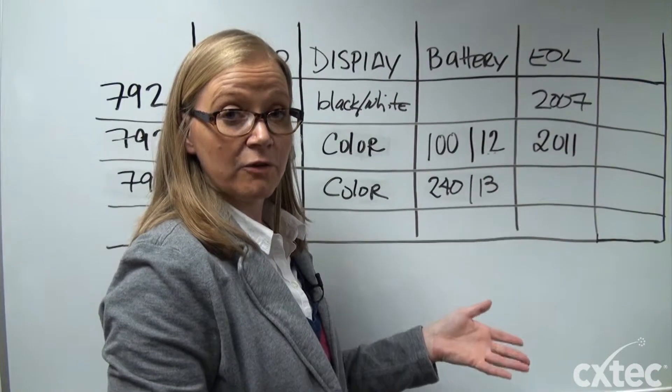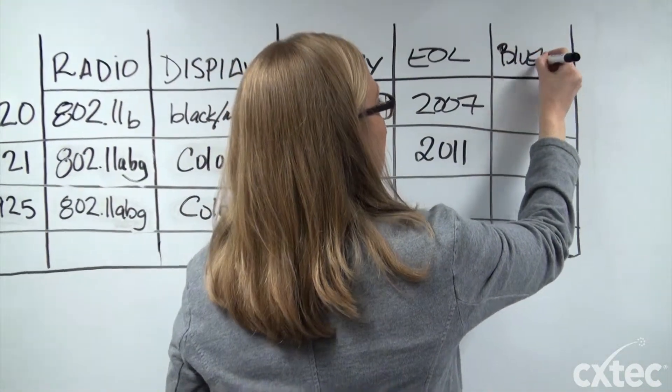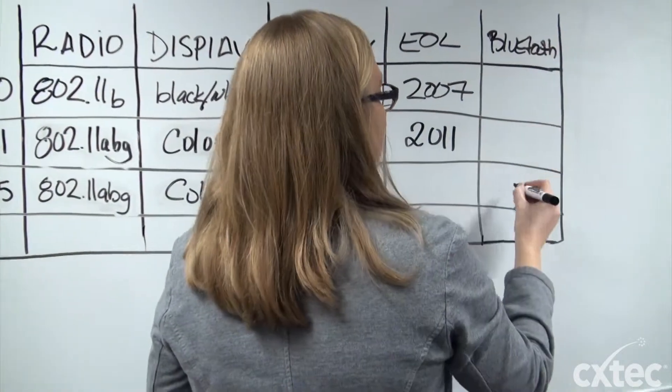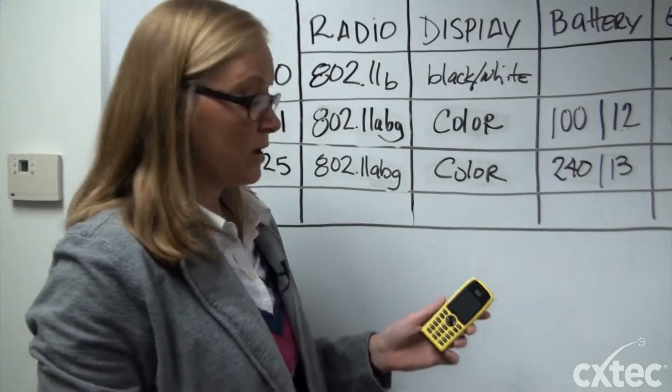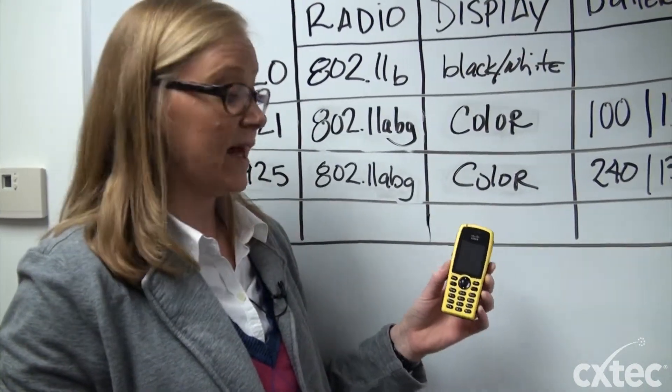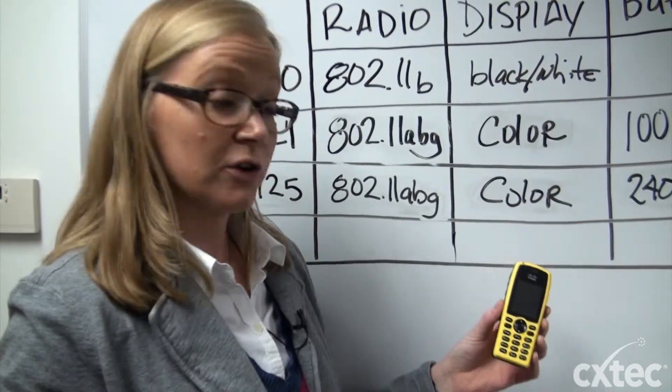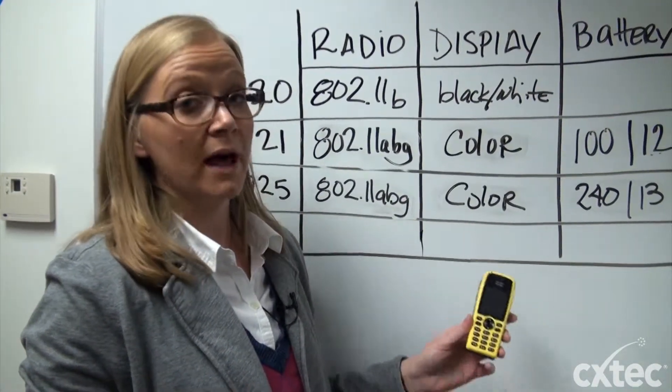One other feature that they released on this model is the support for Bluetooth. In addition to Bluetooth the 7925 comes in an EX version. The EX version of this handset is yellow in color and it is certified for use in explosive environments. This phone will not emit a spark.